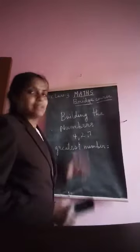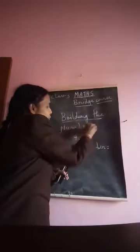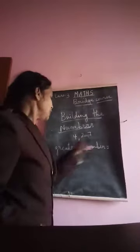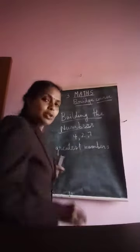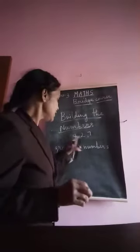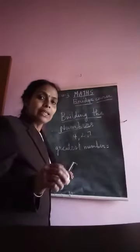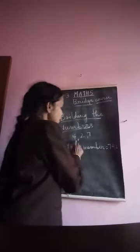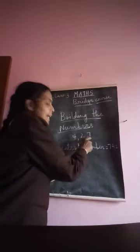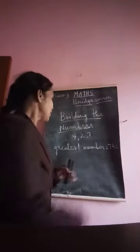Now, building numbers. Some digits will be given to you and you have to build the greatest number using those digits. To build the greatest number, you arrange the digits in descending order — write the biggest number first. So using digits 4, 3, and 7, the greatest number is 742.